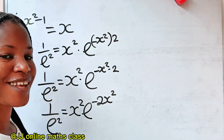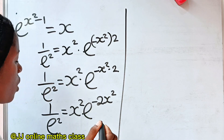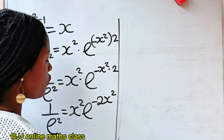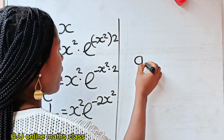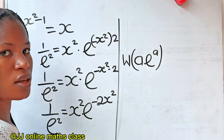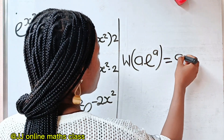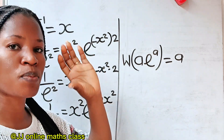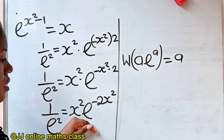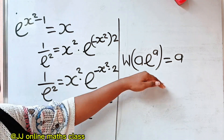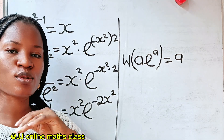Remember the Lambert W function? For those of you that don't know what that is: the Lambert W function states that if you have an expression in the form a times e to the power of a, and you introduce the Lambert W function to it, this is actually equal to a. The power of e and its coefficient must be the same. We are going to manipulate our expression to give us that same form, then introduce the Lambert W function to solve for x.